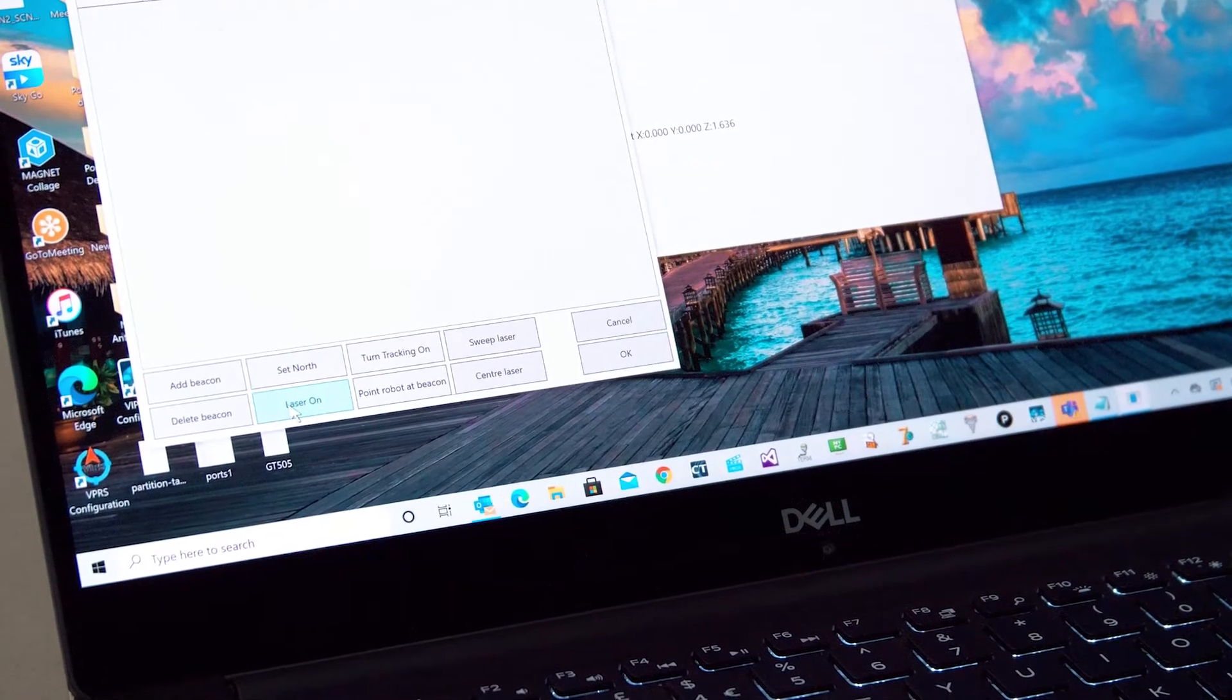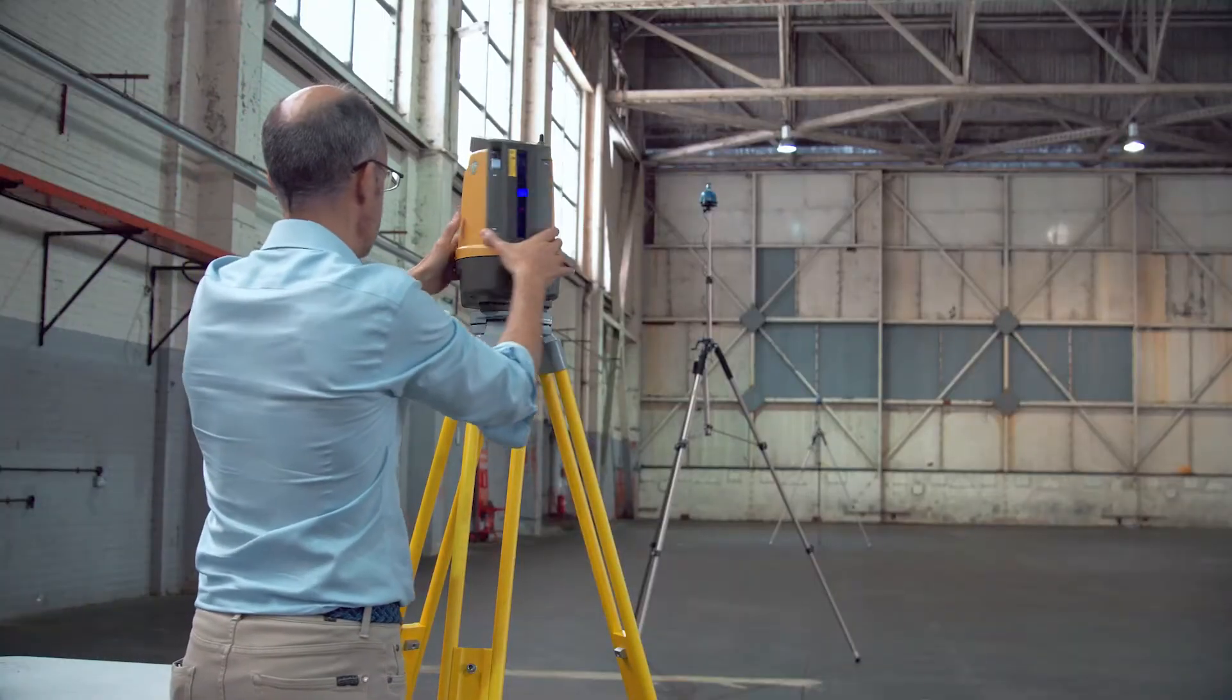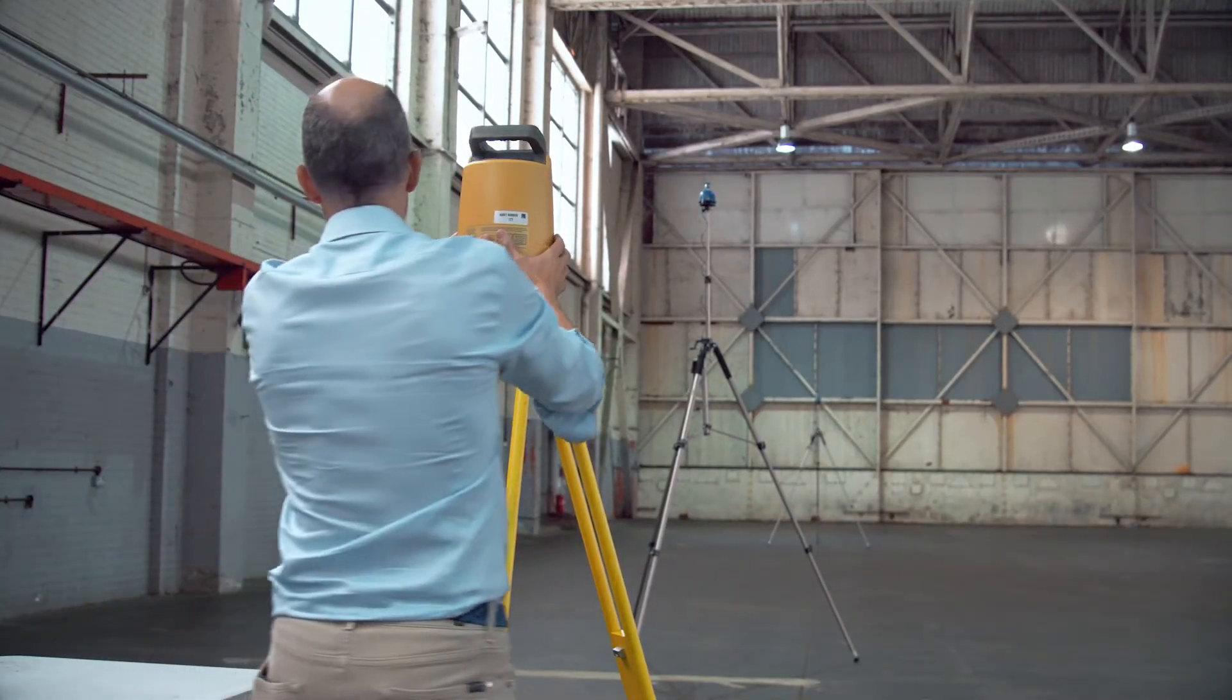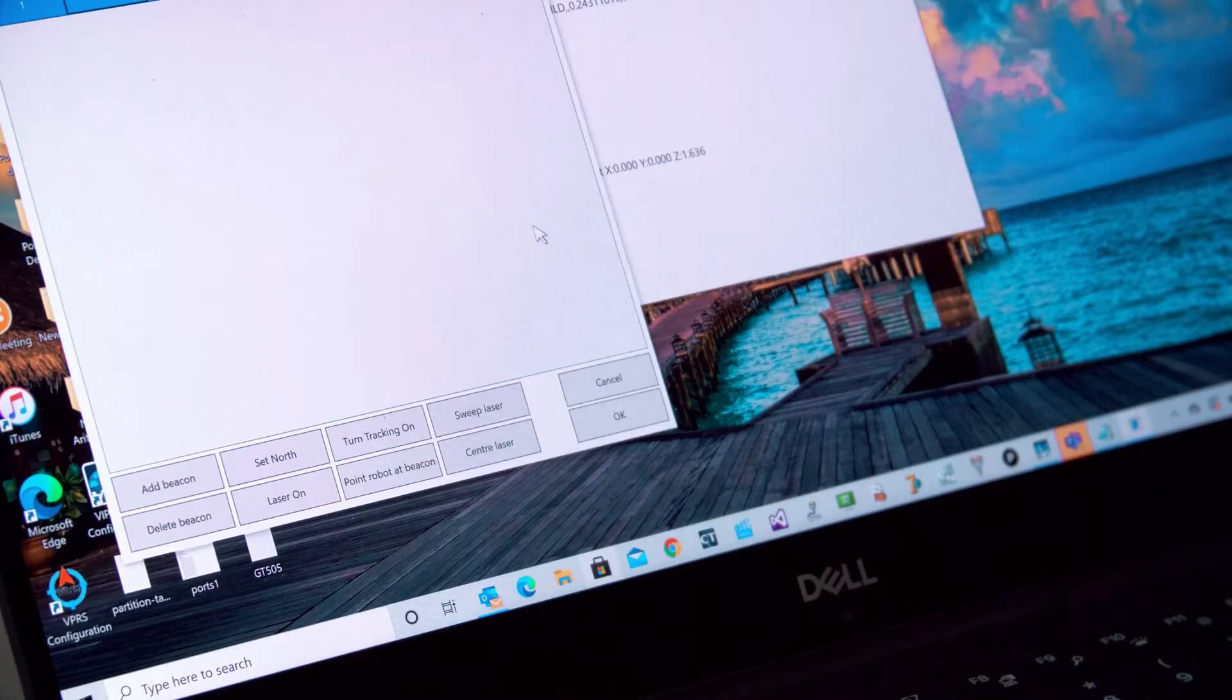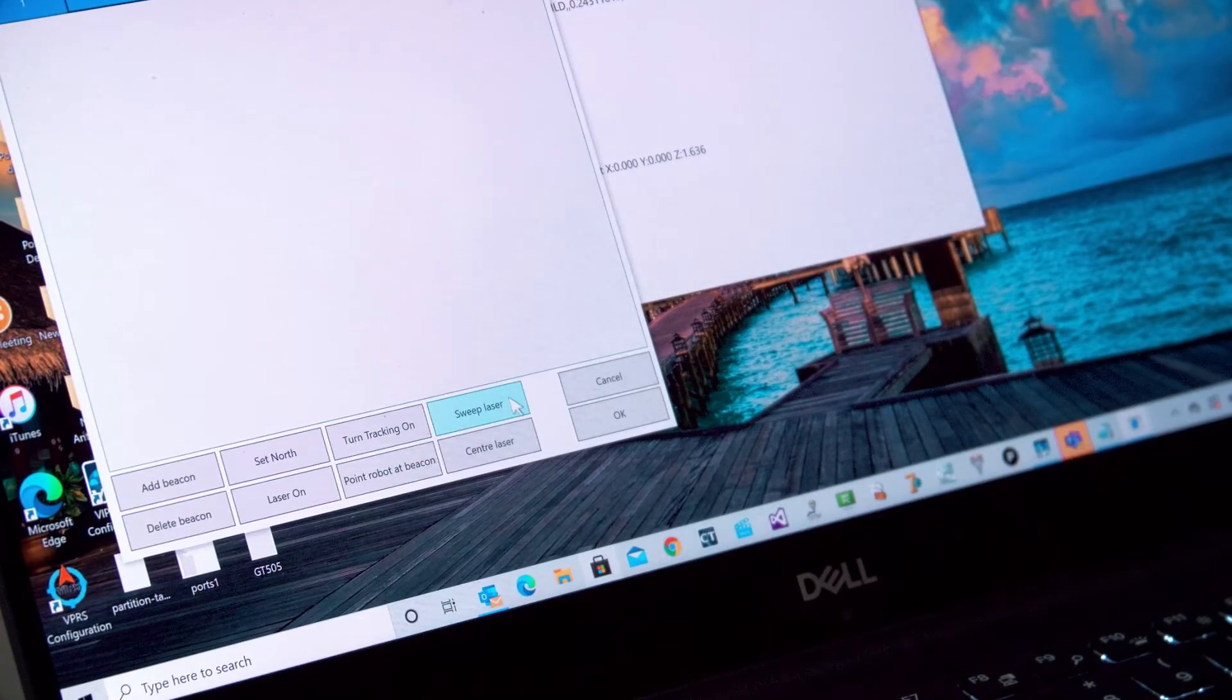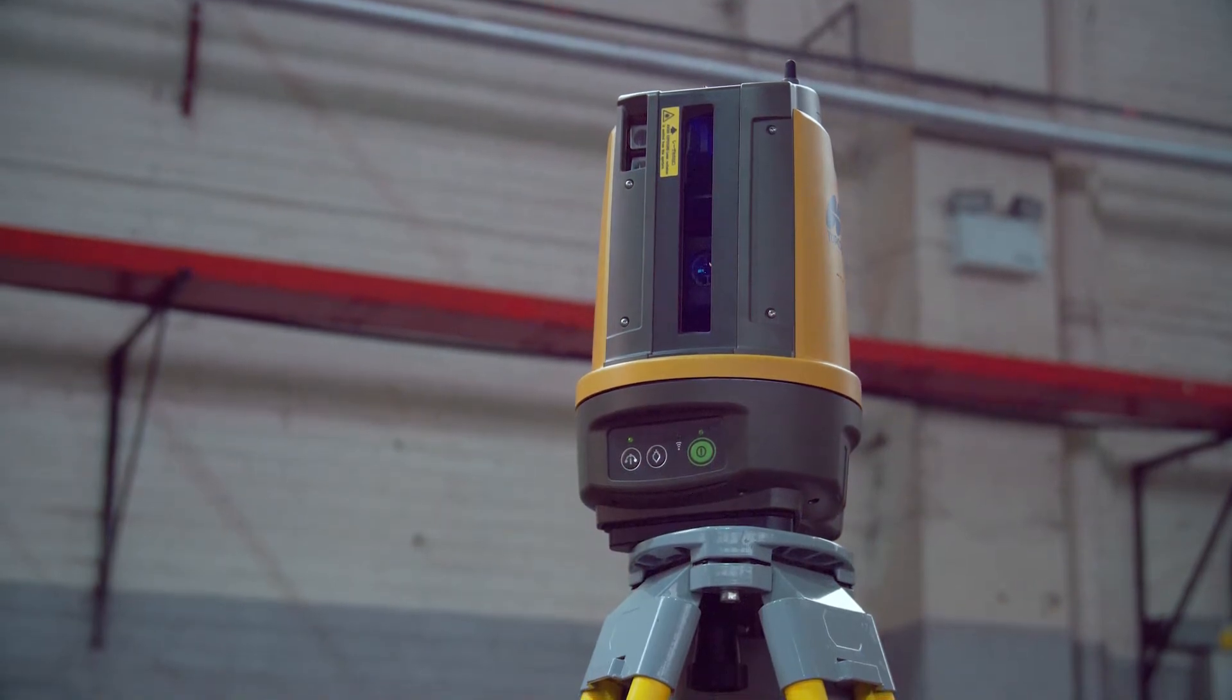Switch the laser on using the software and turn the robot head by hand to roughly line up with the first beacon. You can use the Sweep Laser function to move the laser up and down, which makes it easier to line up.